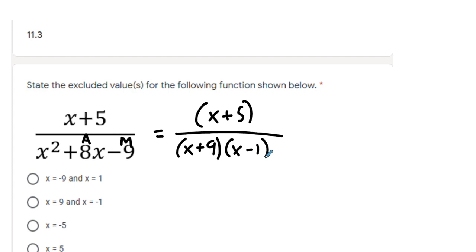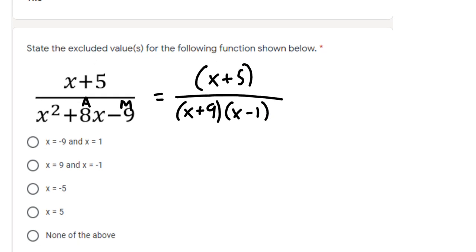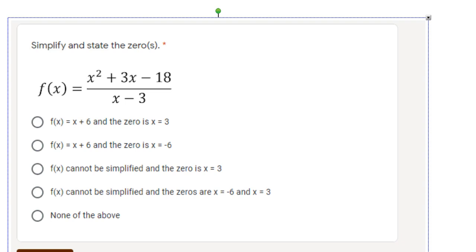And what values for x can I not pick? If I were making a table, they'd be negative 9 and positive 1. So those are going to be the excluded values because it would make the bottom be 0.